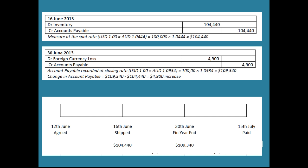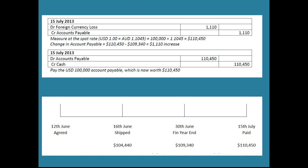Moving forward to when we pay on 15th July, the Australian dollar has weakened again — one US dollar is now buying 1.1045 Australian dollars. So $100,000 US is now worth $110,450. The difference from the year-end balance is $1,110 — another loss. We started owing the equivalent of $104,440 Australian; by the time we pay, we're paying $110,450. We're worse off, and those changes have come through profit and loss over time.